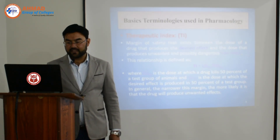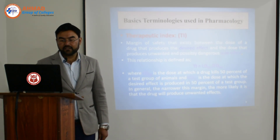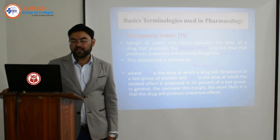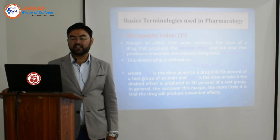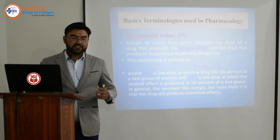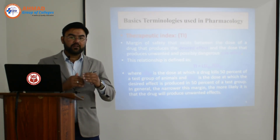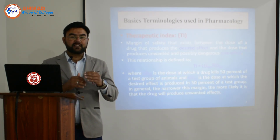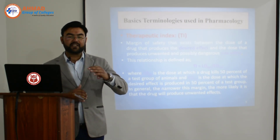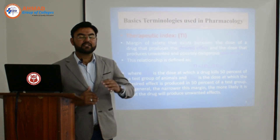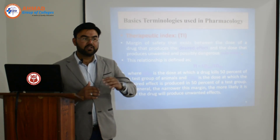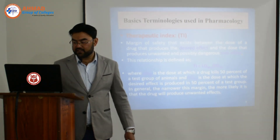The narrower this therapeutic index margin, the more likely it is that the drug will produce unwanted effects — the drug is more unsafe. The wider the therapeutic index margin, the more safe the drug is. For example, paracetamol has a wide margin, so it is a safe drug.